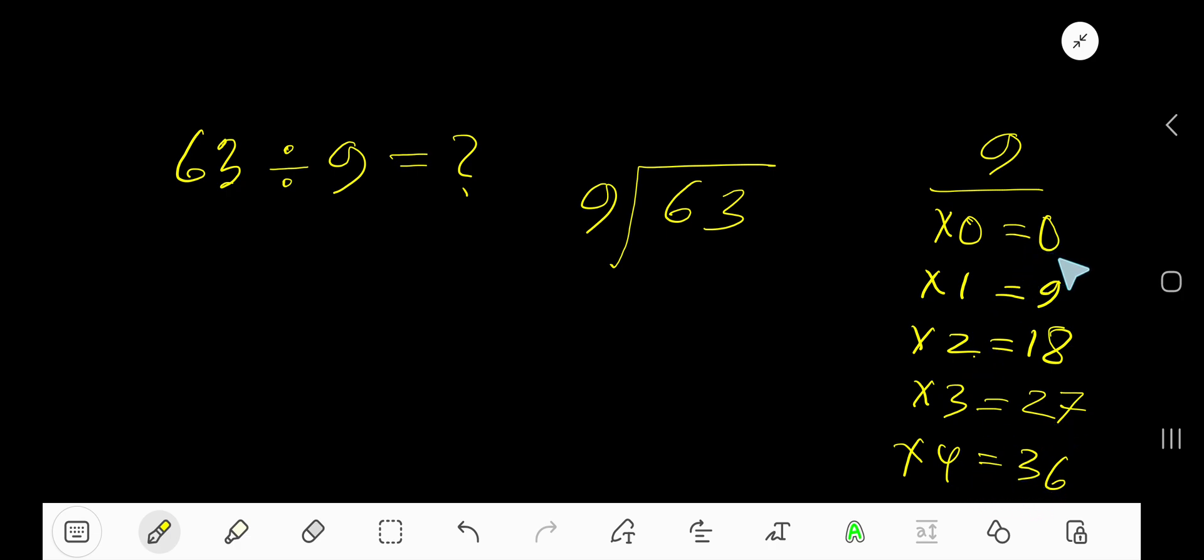To find the multiplication table of 9, add 9 to the previous step: 0 plus 9 is 9, 9 plus 9 is 18, 18 plus 9 is 27, 27 plus 9 is 36. This process continues. Now, 9 goes into 6 how many times? As 6 is less than 9...